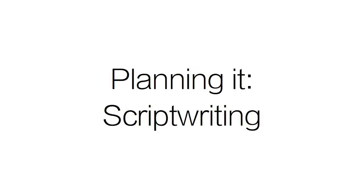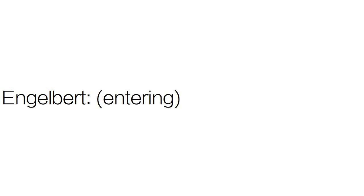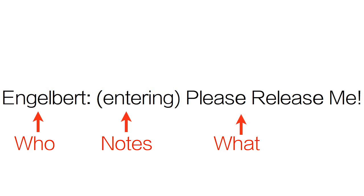The next step of the planning process is script writing. In Hollywood, there is a very official format for screenwriting, but for amateurs, here is a very simple way to screenwrite. First, you write the person who is speaking with a colon after it — in this case, Engelbert is speaking. After that, in parentheses, write down any director's notes — in this case, Engelbert is entering. And finally, write what the character is saying — in this case, Engelbert is saying, 'Please release me.'